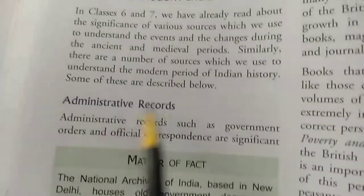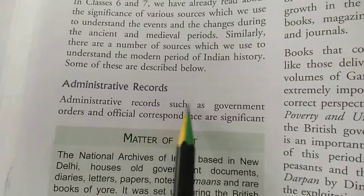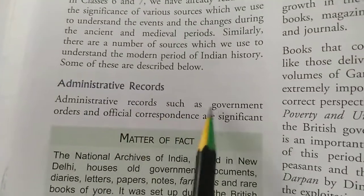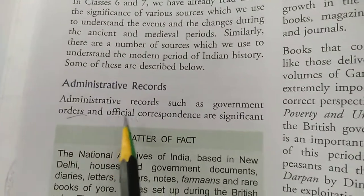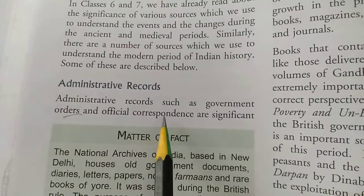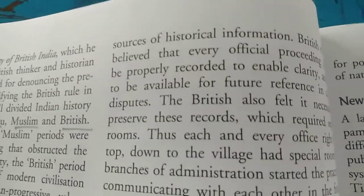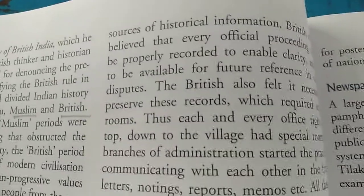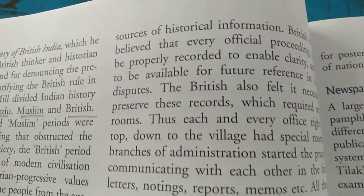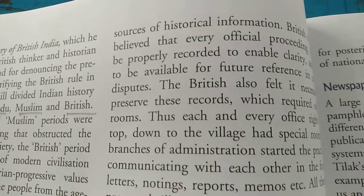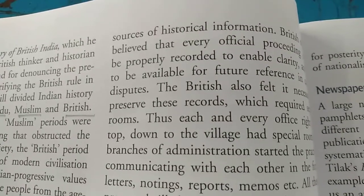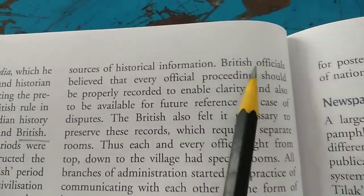The first source is administrative records. Administrative records such as government orders and officials' correspondence are significant sources of historical information. They are official documents and government orders, and are known as administrative records.